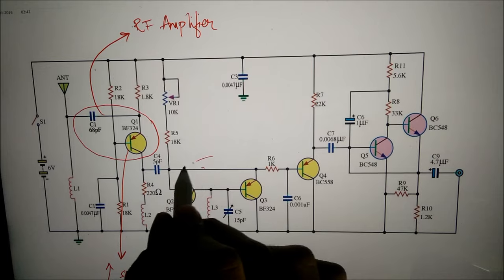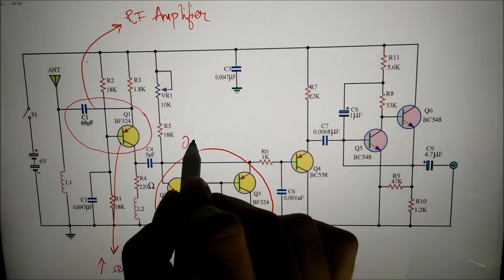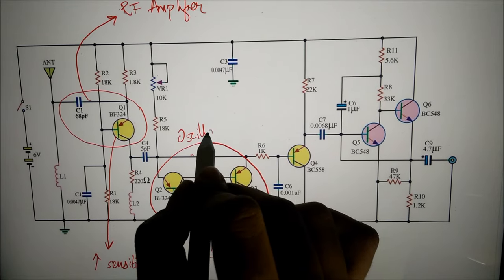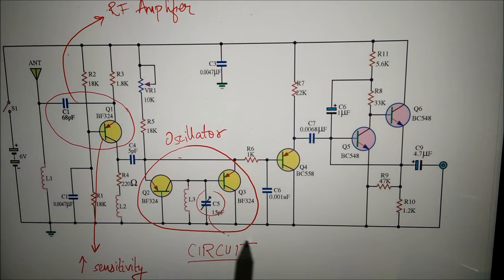The principle of this circuit is to use the generator frequency circuit or the oscillator circuit, which consists of Q2 and Q3, to produce a frequency synced with the frequency that has been derived from Q1.